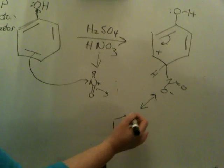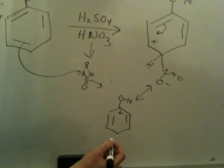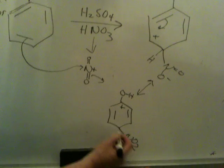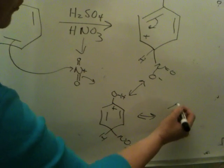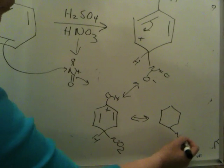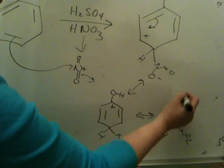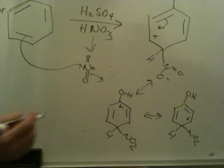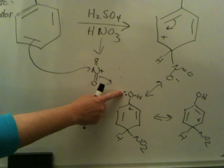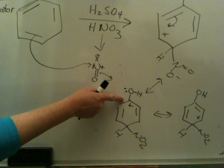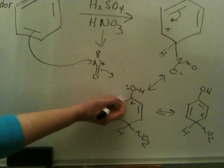You would get this resonance form with the plus charge on the site bearing the oxygen. NO2 down here I'm abbreviating. Another resonance form that looks like this. These are the traditional resonance forms. But we have one additional resonance form because of the lone pair on this oxygen.